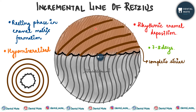In longitudinal section, the incremental lines appear as a series of brownish dark lines which extend from the DEJ to the enamel surface. There can be complete striae or incomplete striae. Complete striae run obliquely in the cervical part and course around the tooth, whereas incomplete striae deviate occlusally from the DEJ toward the surface of the tooth.